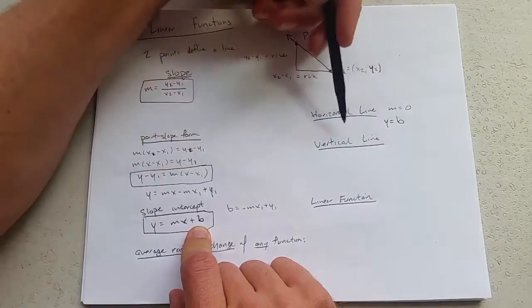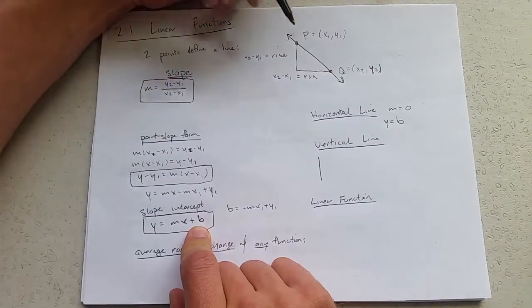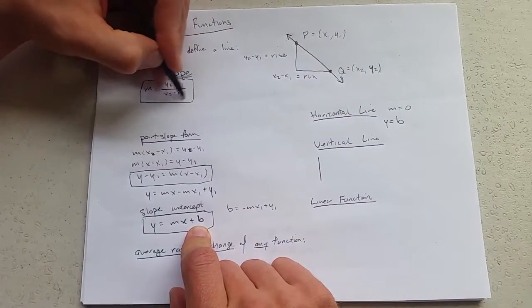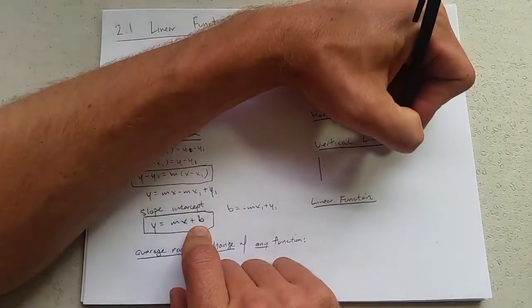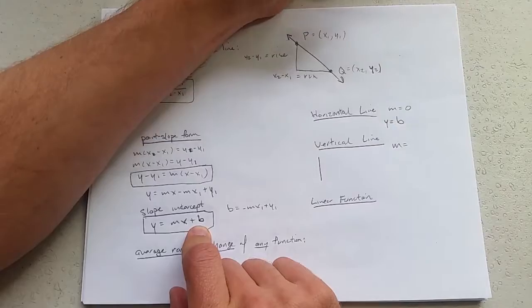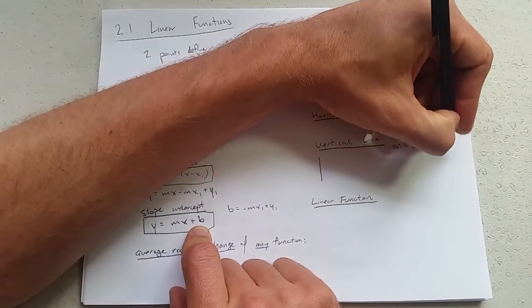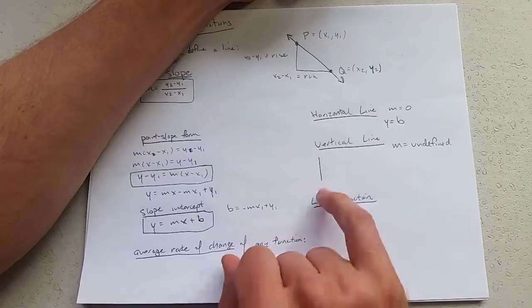Now a vertical line, a vertical line has no run, has a zero run. So we would be divided by zero if we wrote the slope out. So if I write m, this m is not a number, it's undefined. So we have an undefined slope on a vertical line.